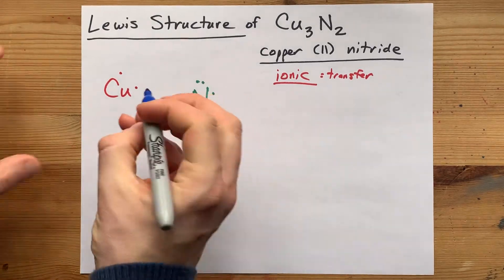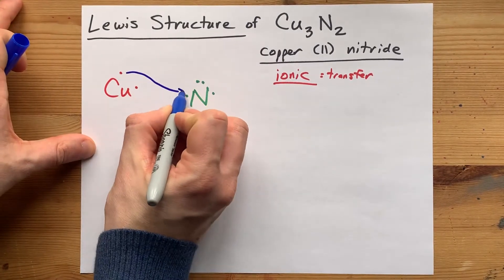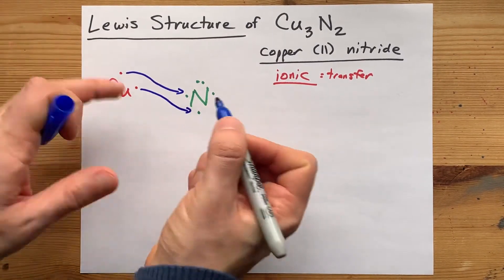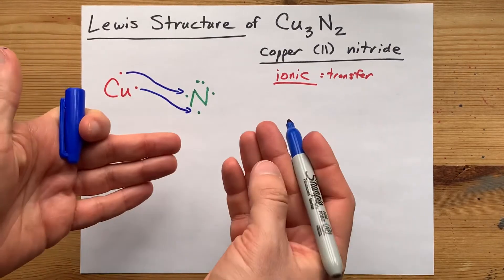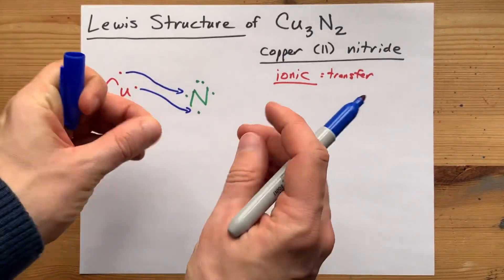This copper atom is more than willing to donate its two, but that still doesn't make the N stable. It needs a full outer shell of eight.